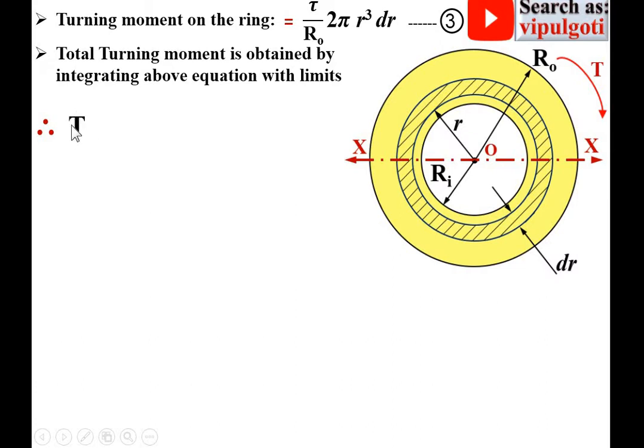Capital T, the total turning moment of the hollow section, equals the integration of τ/Ro·2π·r³·dr with the minimum limit RI for minimum radius and maximum radius RO.